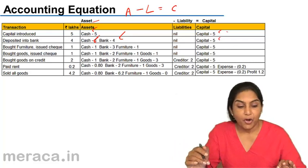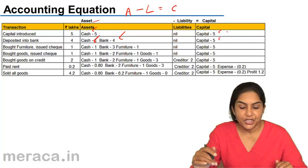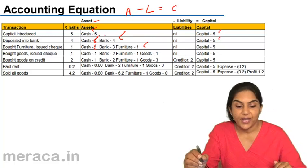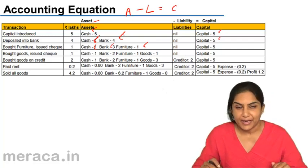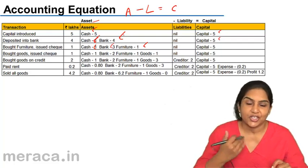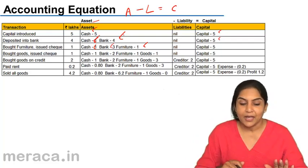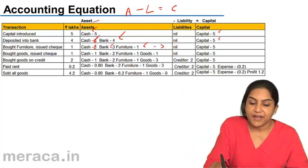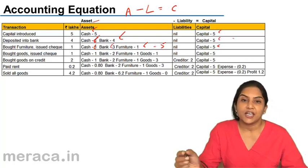Next, bought furniture, issued check. How much? 1 lakh. The moment I buy furniture, I have now an additional asset, furniture of 1. Cash continues to be 1. But my bank balance has now come down to 3 because I have issued a check, money will go out of my bank. The banker on my behalf has paid for the furniture, has honored the check and money goes out of my bank account. My bank balance comes down. My cash remains at 1 lakh, my bank balance is now 3 lakh, but I have a furniture of 1 lakh. Totally I get 5 lakhs. Liabilities are nil. My capital, there is no change, continues to be 5.